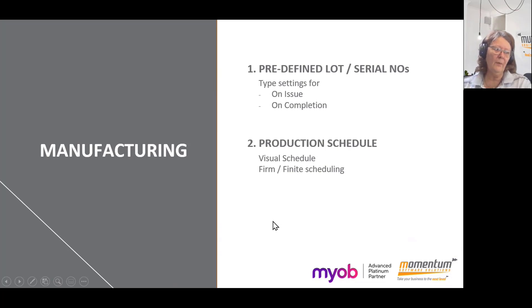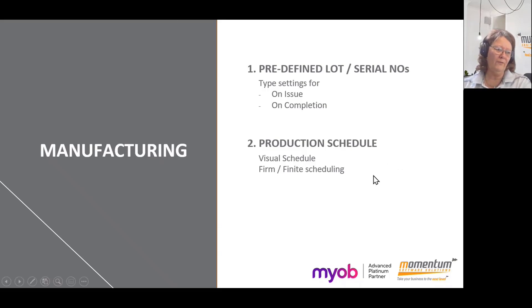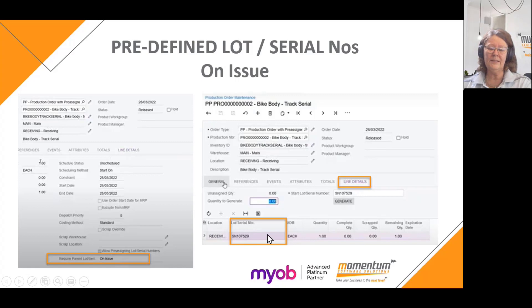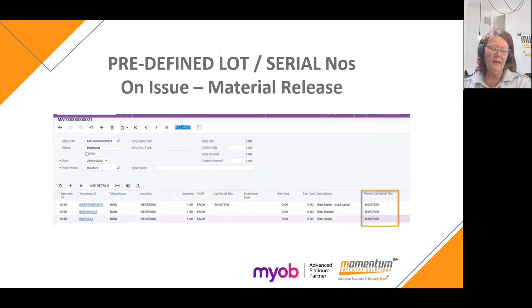In the manufacturing area, there have been some nice new features. Jean touched on visual scheduling with firm or finite scheduling, but there's also a brand new feature for lot serial number tracking. This allows you to set a predefined item based on whether it is to be determined at the time of issue. If an item is issued and a serial number is attached at that time, that information appears in a new tab on the production order called Line Details, which assigns the number to stock items as they move into production.